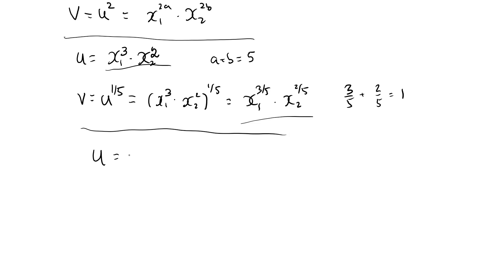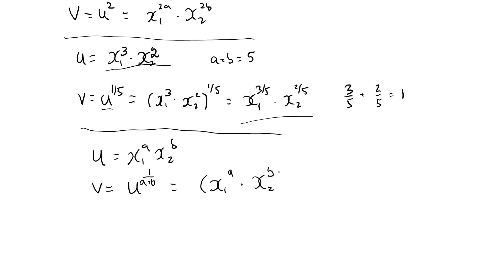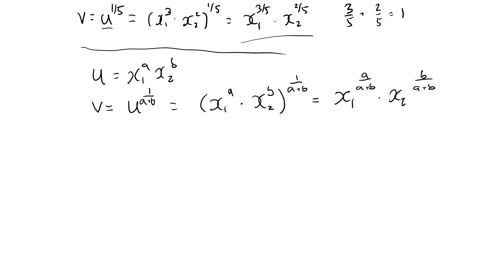Let's see this in general. So if u is x1 to the a times x2 to the b, let's create a new one in the same way. Let's do u raised to 1 over a plus b. That is x1 to the a, x2 to the b, raised to 1 over a plus b, which is x1 to the a over a plus b, times x2 to the b over a plus b. This is a normalized Cobb-Douglas utility function. a over a plus b plus b over a plus b is a plus b over a plus b, which is 1.